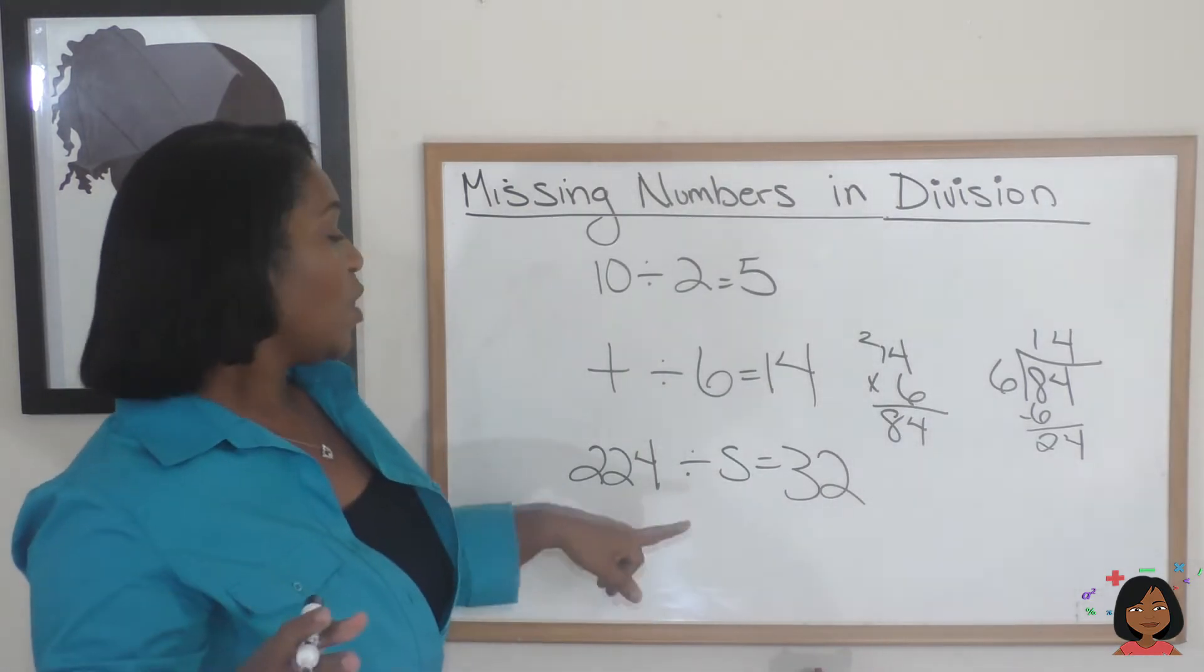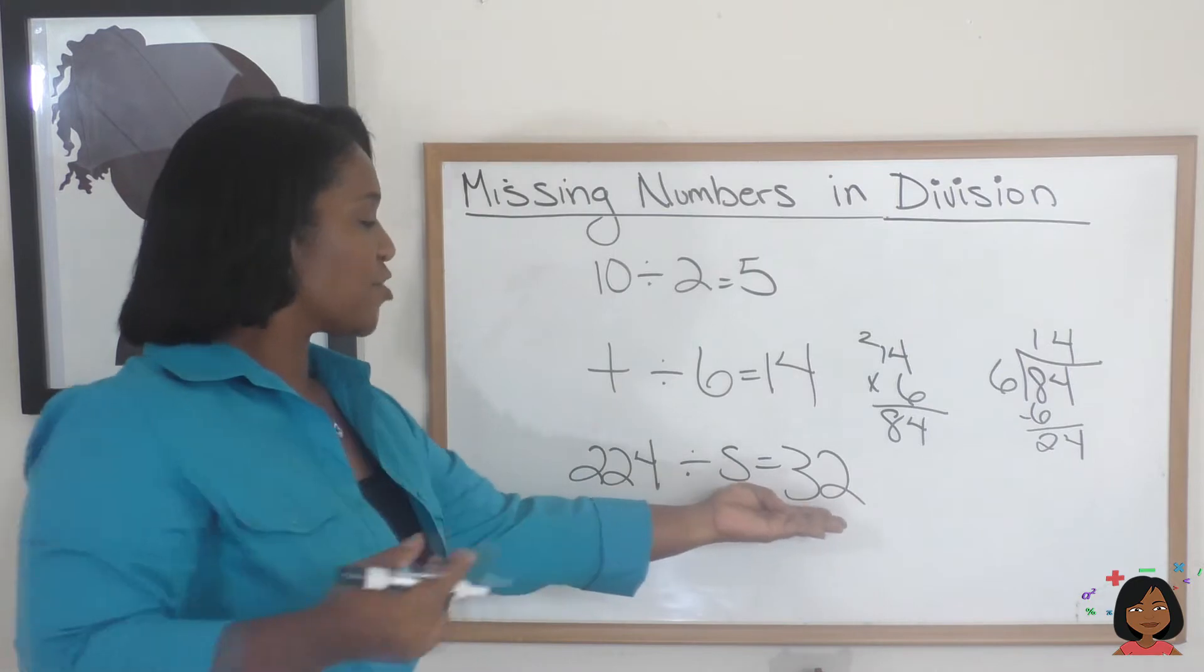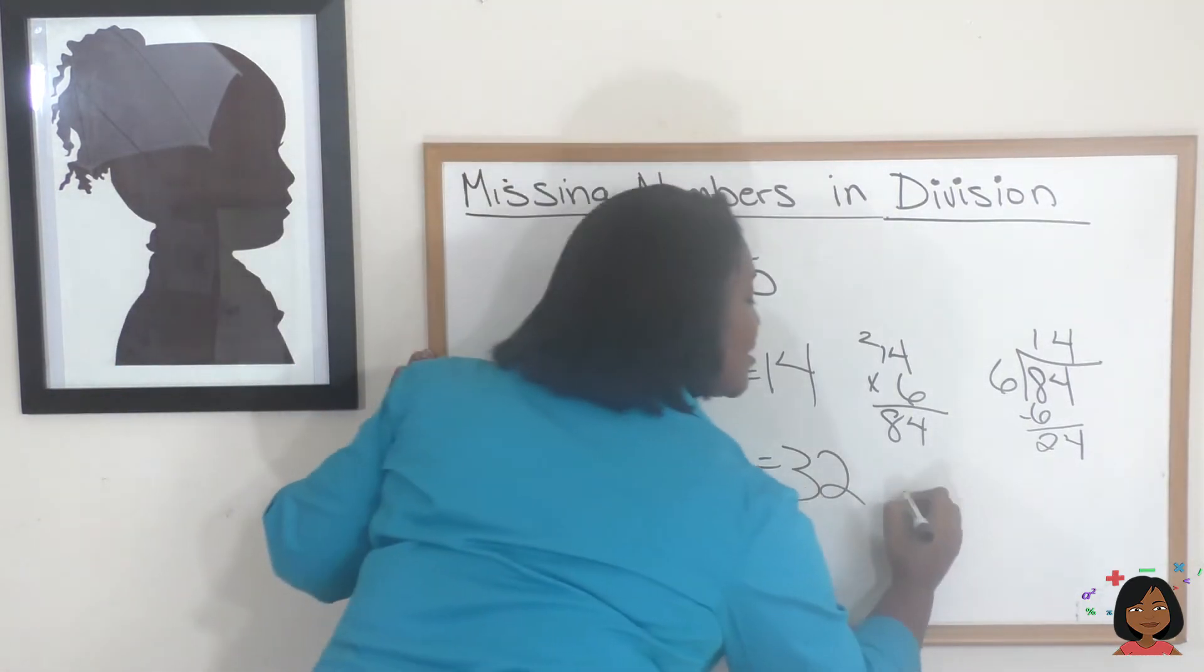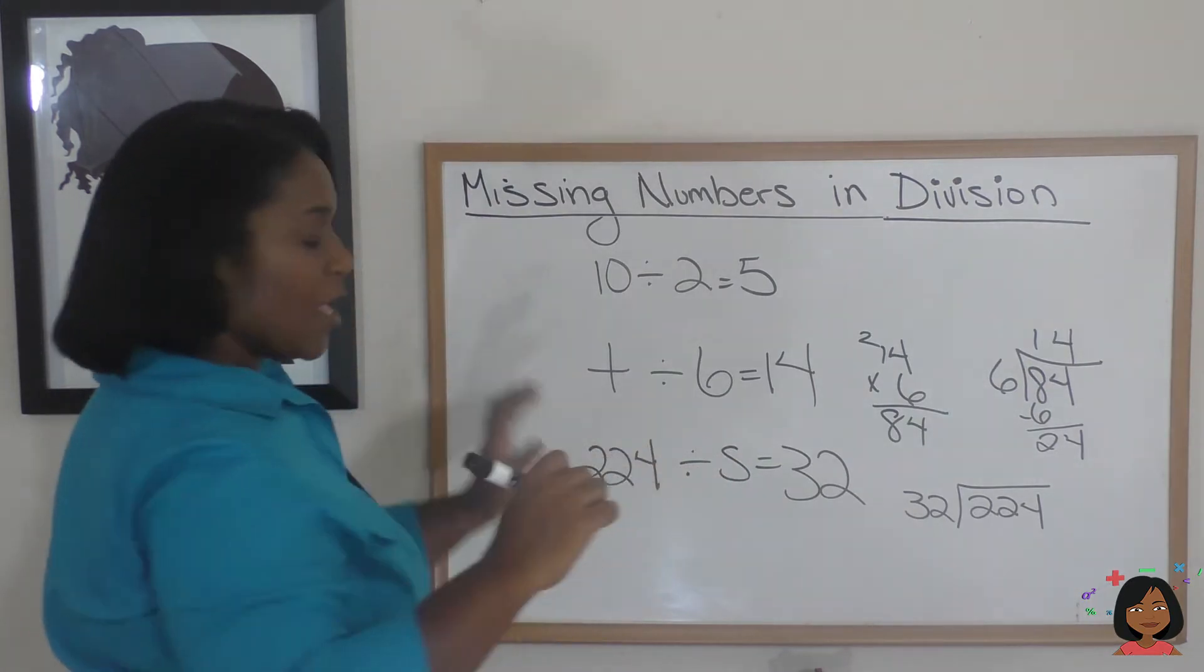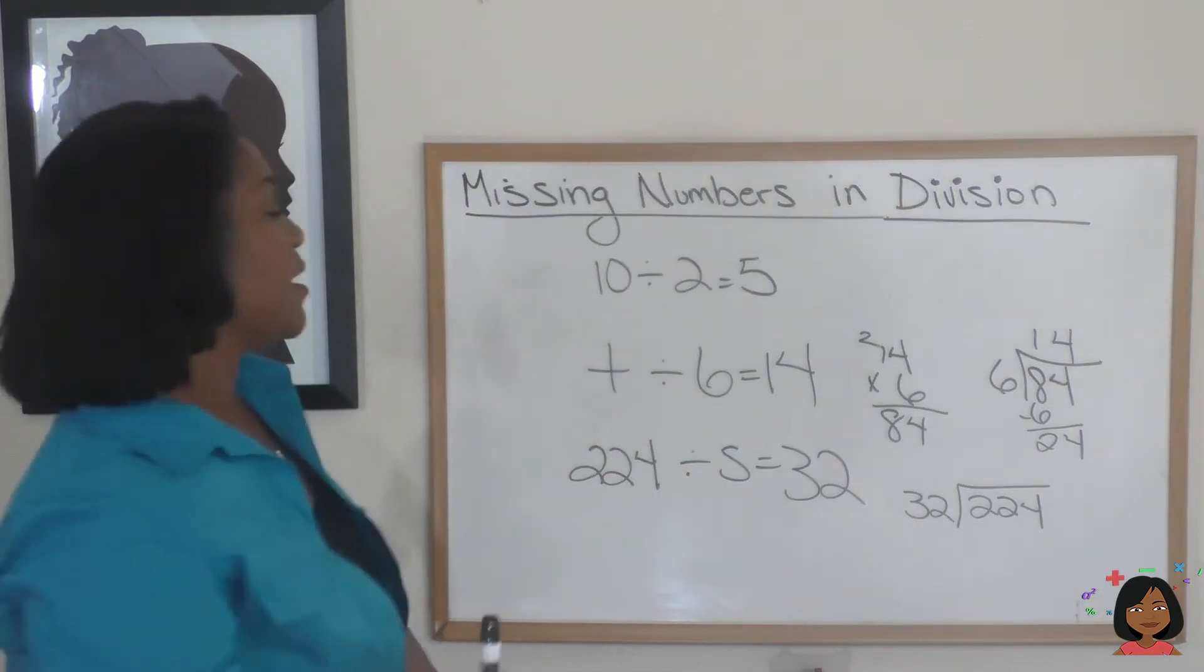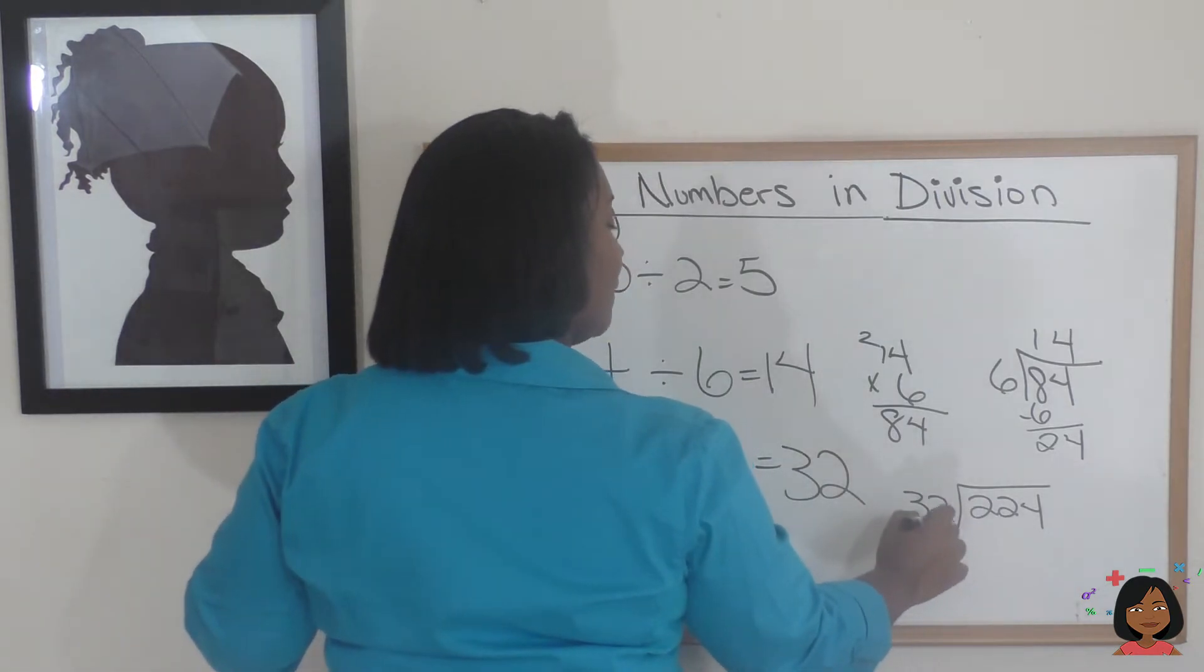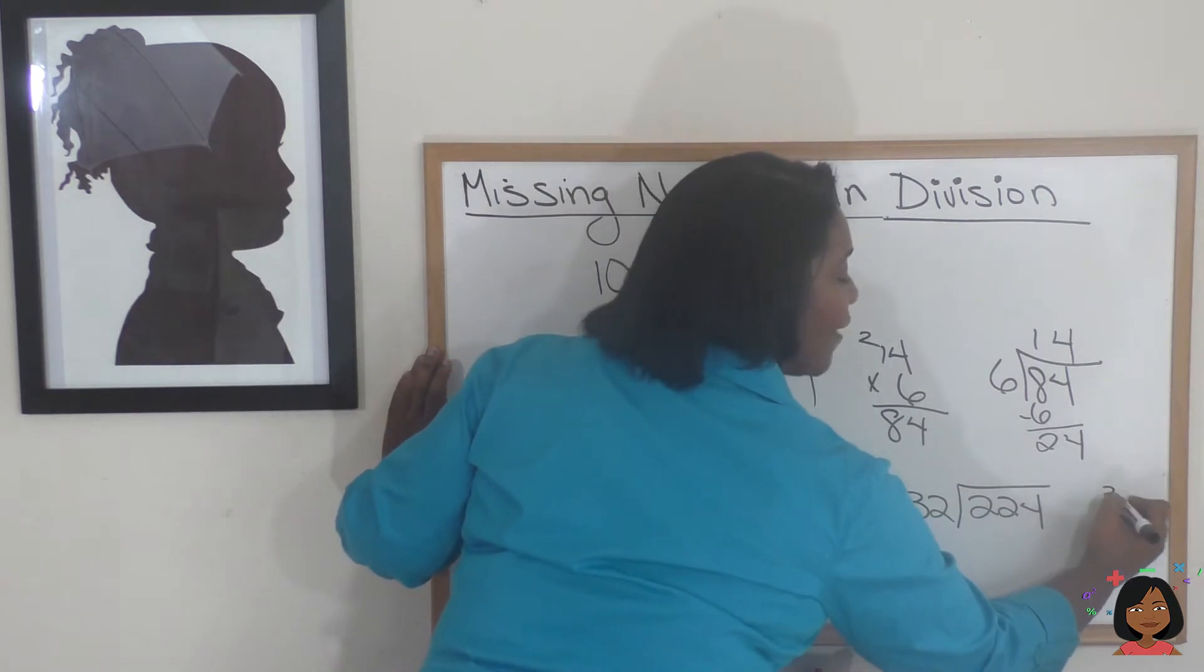So how would we find it? This time we wouldn't use multiplication; we actually would need to use division here. We can say, well, what's 32 into 224? And that'll give us an answer. So let's do it: 32 into 224. Our missing number is 32 times—let's see what that would be.